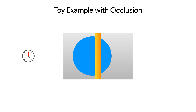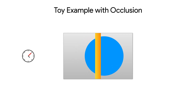To see why motion blur synthesis can be a hard problem, here's a toy example with a blue object moving behind a yellow occluder. The true motion blurred image for this scene should blur the moving blue object but keep the yellow occluder sharp, as we see in this rendering.